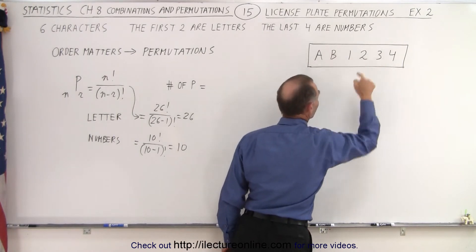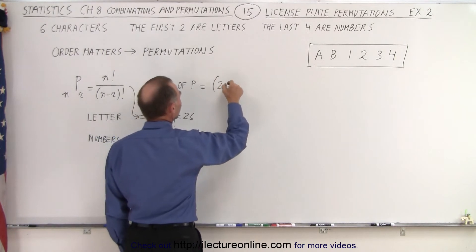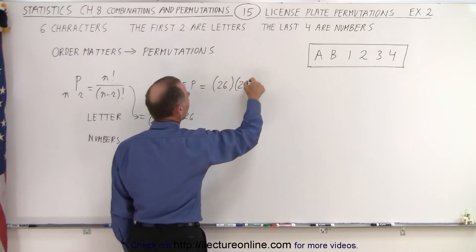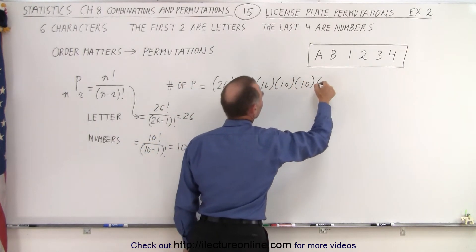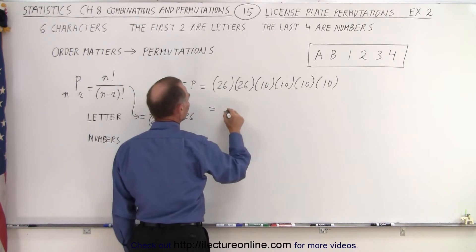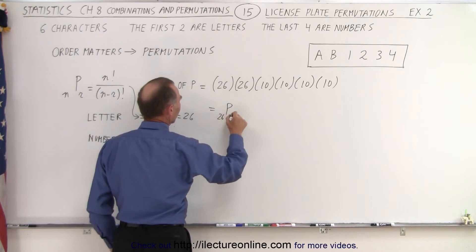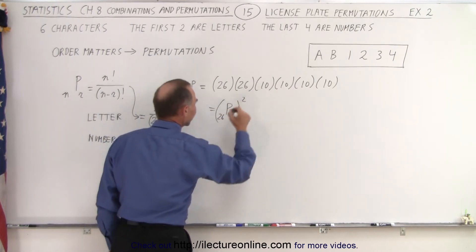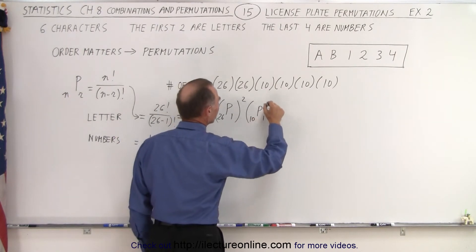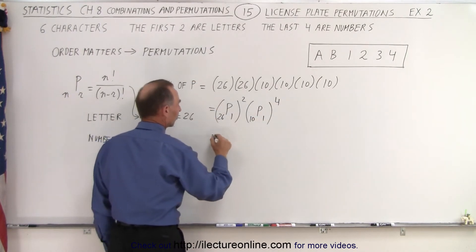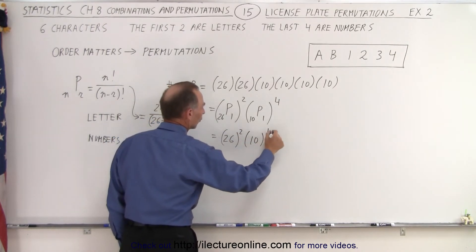The number of permutations for each letter character is 26, and the number of permutations for each number character is 10. So the total becomes 26 times 26 times 10 times 10 times 10 times 10 — or P(26,1) squared times P(10,1) to the fourth power — which equals 26 squared times 10 to the fourth power.